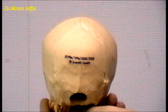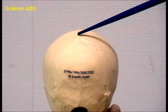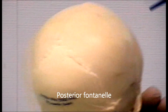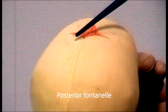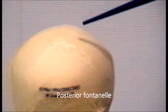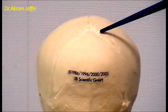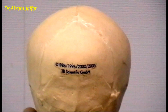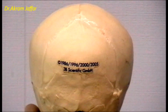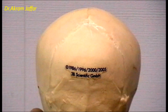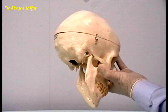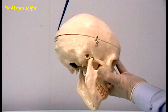In the newborn skull, the sagittal suture and lambdoid suture do not quite meet, and there is usually a triangular posterior fontanel, as opposed to the diamond-shaped anterior fontanel. There is a triangular posterior fontanel at the site of the lambda, which is much smaller than the anterior fontanel.